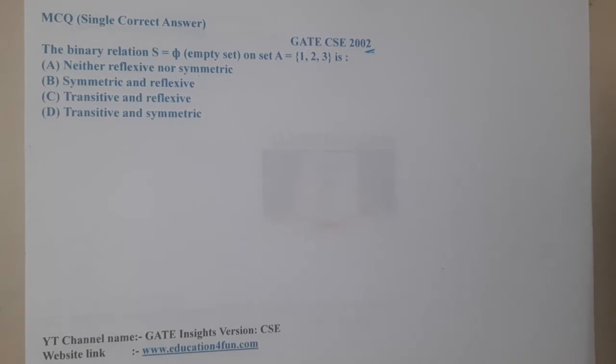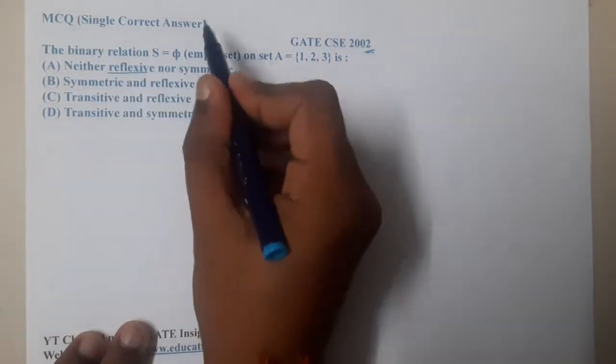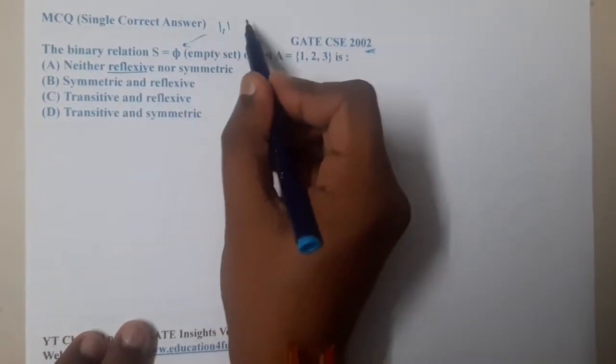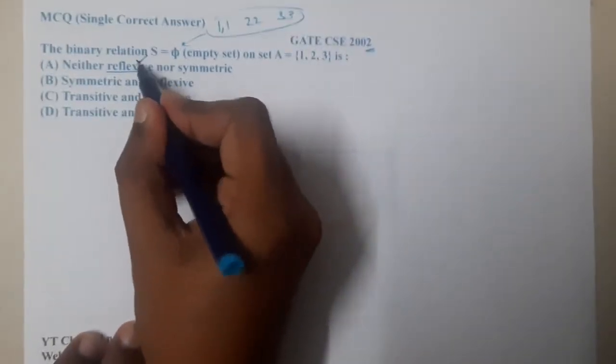So based on this understanding, what we can say? Option A says that it is neither reflexive. Yes, it is not reflexive because (1,1), (2,2), (3,3), so these three elements are missing. Hence this part is correct.